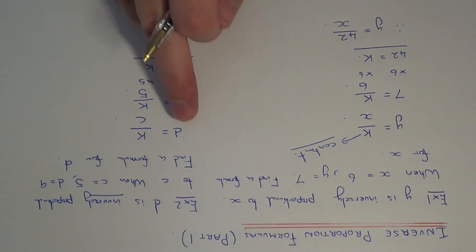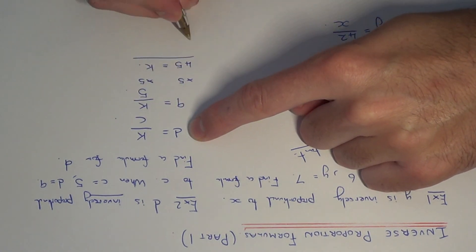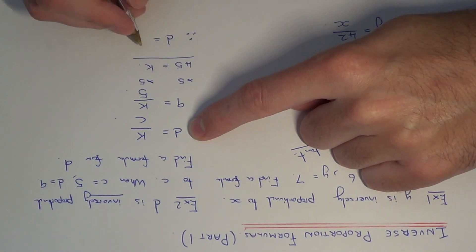So we just need to go back to our original formula and change k to 45. So don't forget to write this down: d is equal to 45 over c.